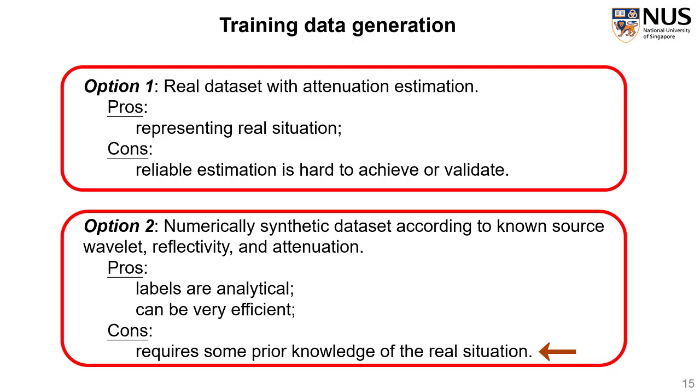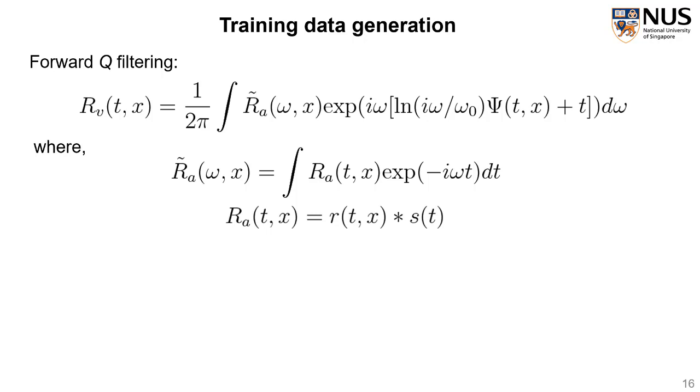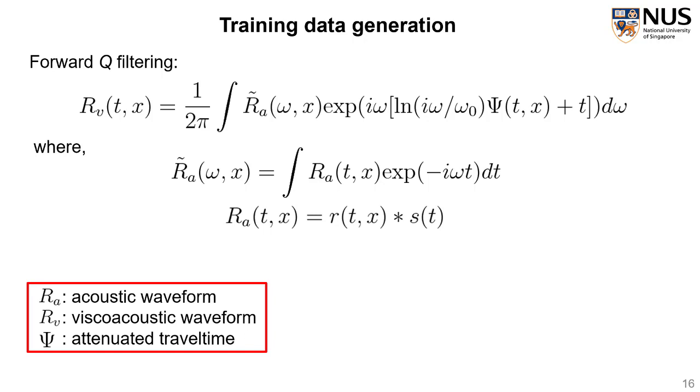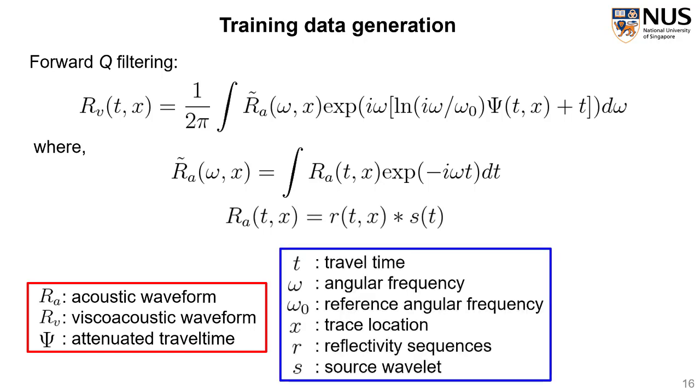Like we mentioned, we synthesize the training data by using this forward Q filtering process. It basically filters RA non-stationarily according to the filters based on ψ, which gives us RV. RA, RV, and ψ patches are cross-bounding to each other as the input and output of the neural network. Also, notice RA is actually obtained by convolving the source wavelet and reflectivity. Here, we assume that the source wavelet can be derived from direct arrival and the reflectivity sequence can be obtained from well log in the working field.